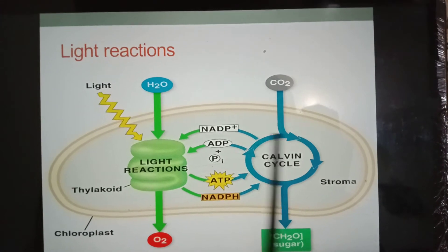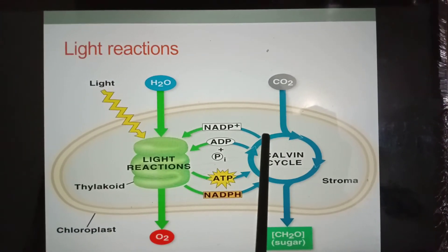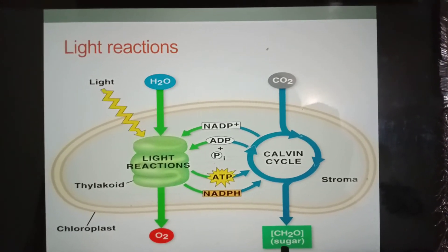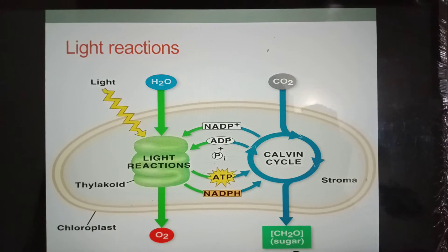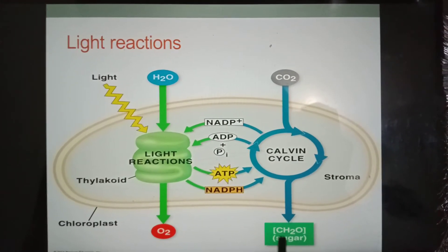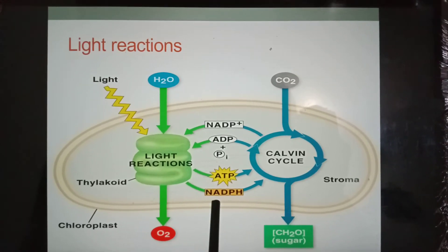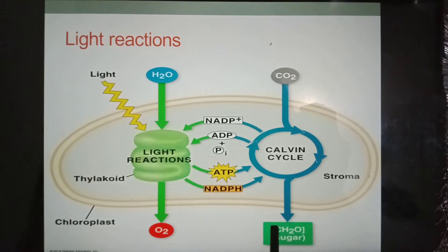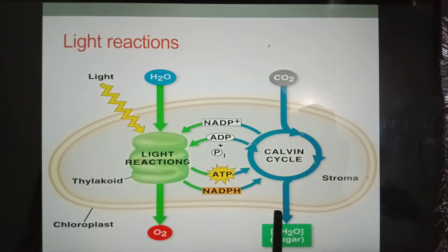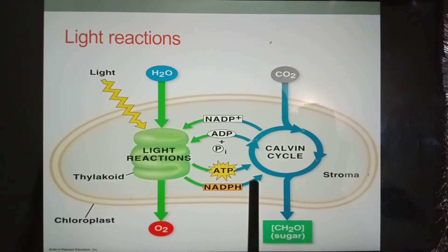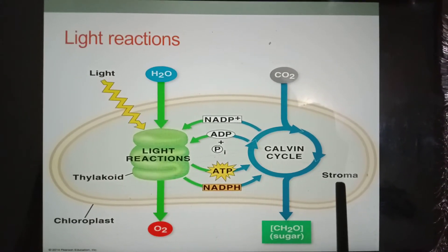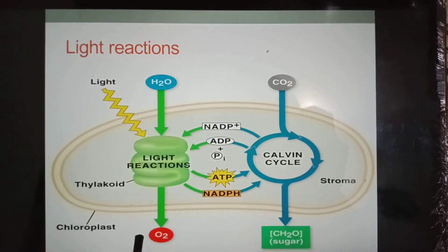During the second phase, carbon dioxide is reduced to make glucose, C6H12O6, also called sugar. In this phase, energy from high energy molecules ATP and NADPH is utilized. Since these reactions do not use light energy directly, they are known as dark reactions. The dark reactions take place in the stroma of chloroplasts.